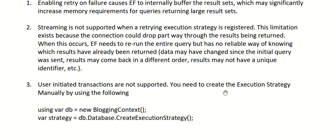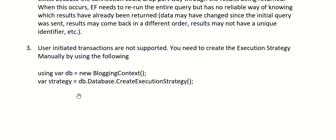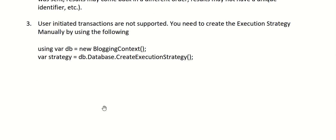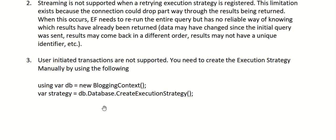If you need user-initiated transactions with retry support, you can create an execution strategy manually. Resolve your DbContext object, then call context.Database.CreateExecutionStrategy() to extract a strategy object. On that strategy, call Execute() and pass your user transaction block inside it. This way, whenever a transient failure occurs, Entity Framework treats the entire transaction block as a fresh set of instructions and retries it from the beginning.